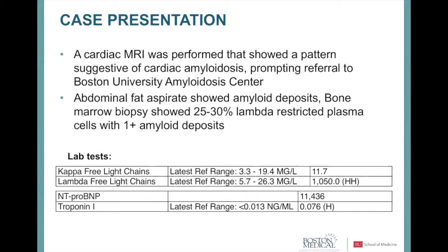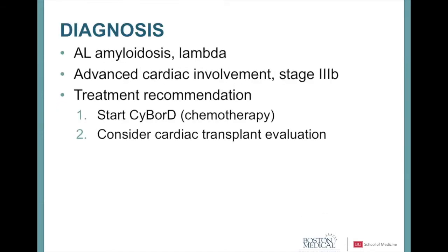She was referred for cardiac MRI, which showed a pattern very consistent with cardiac amyloidosis, prompting referral to Boston University. At our center she had an abdominal fat aspirate showing amyloid deposits, a bone marrow biopsy showing a lambda plasma cell dyscrasia, and lab tests demonstrating a very elevated lambda free light chain. She also had a very high NT-proBNP — normal is less than 300 to 330 — and an elevated cardiac troponin. The diagnosis was AL amyloidosis, lambda subtype.